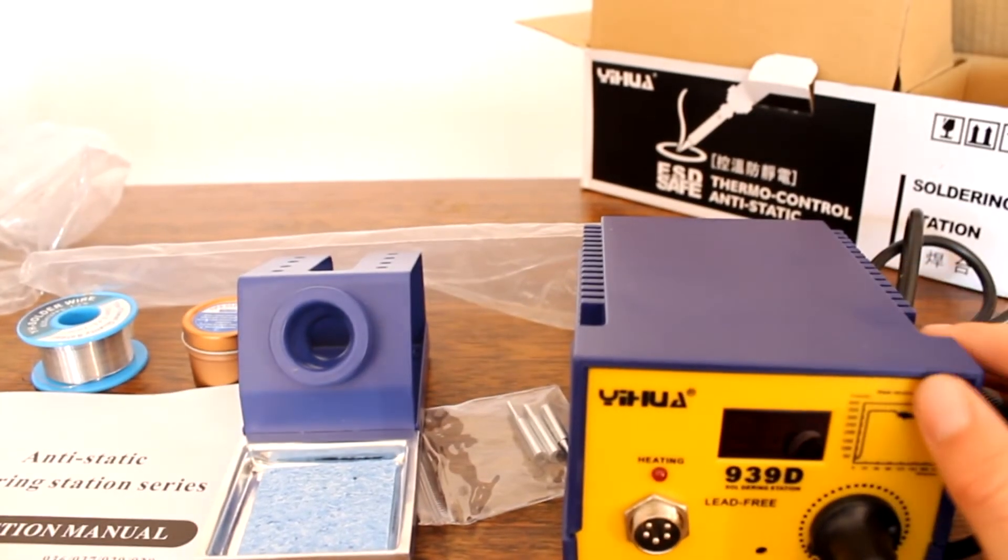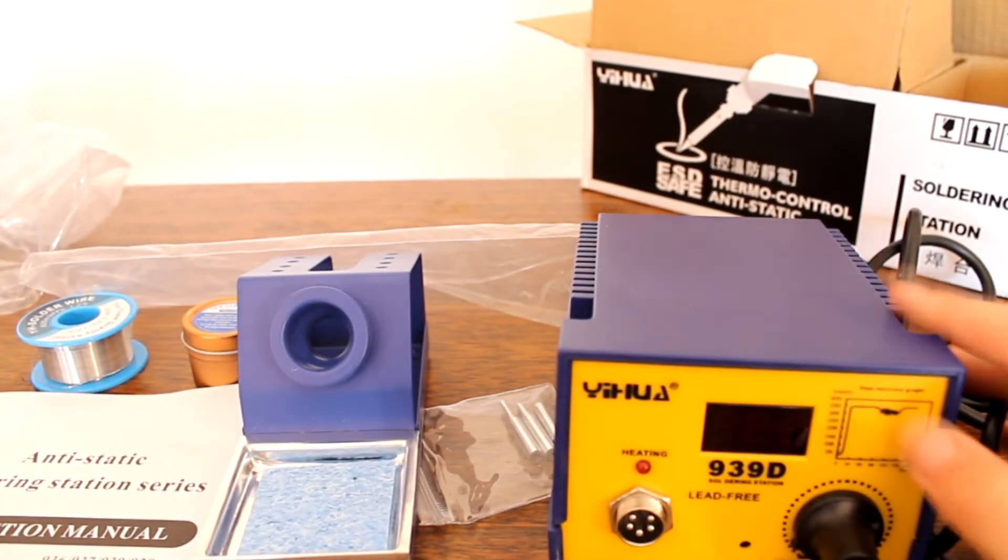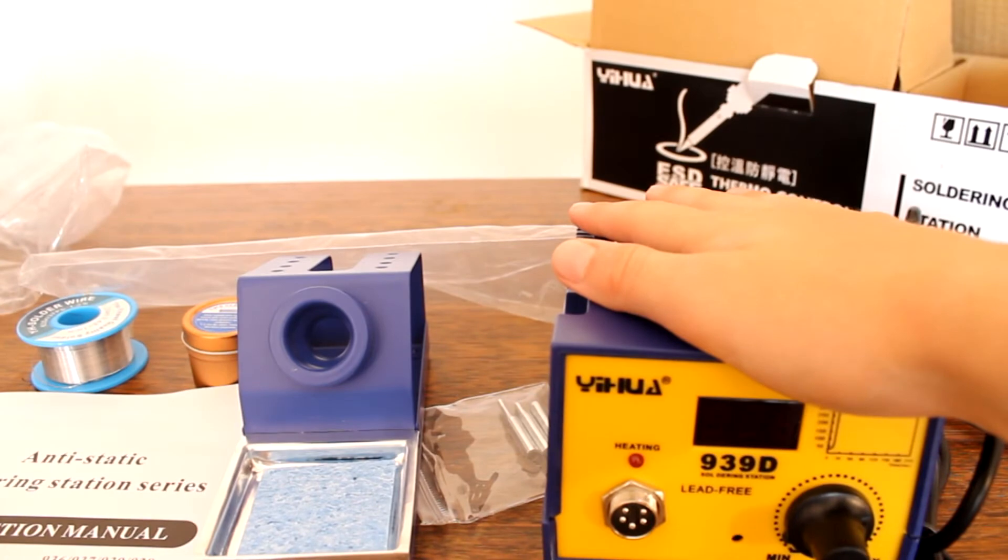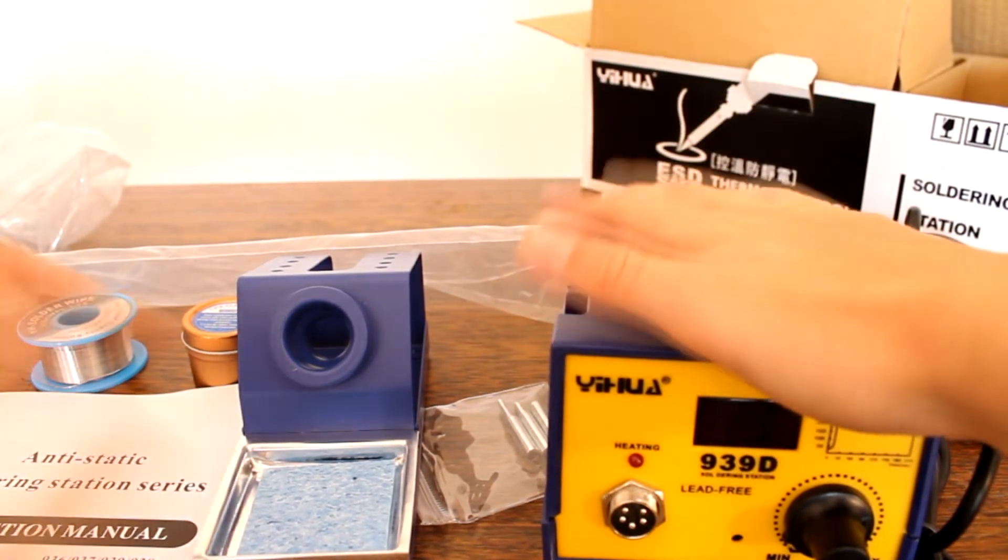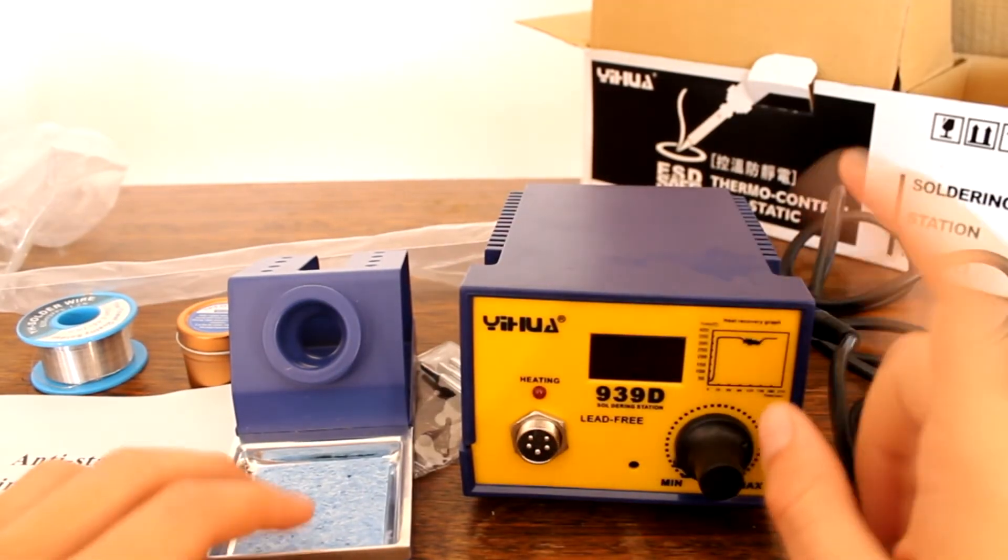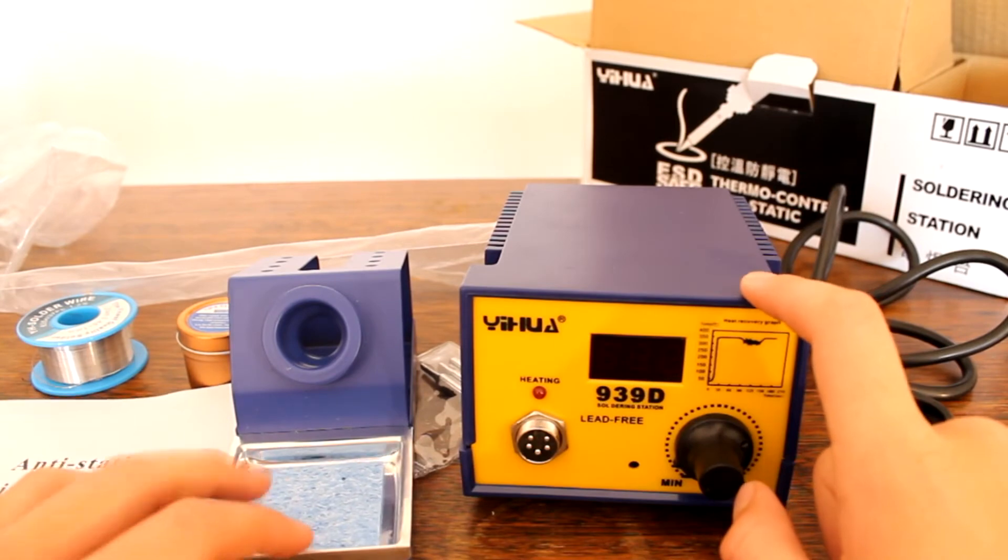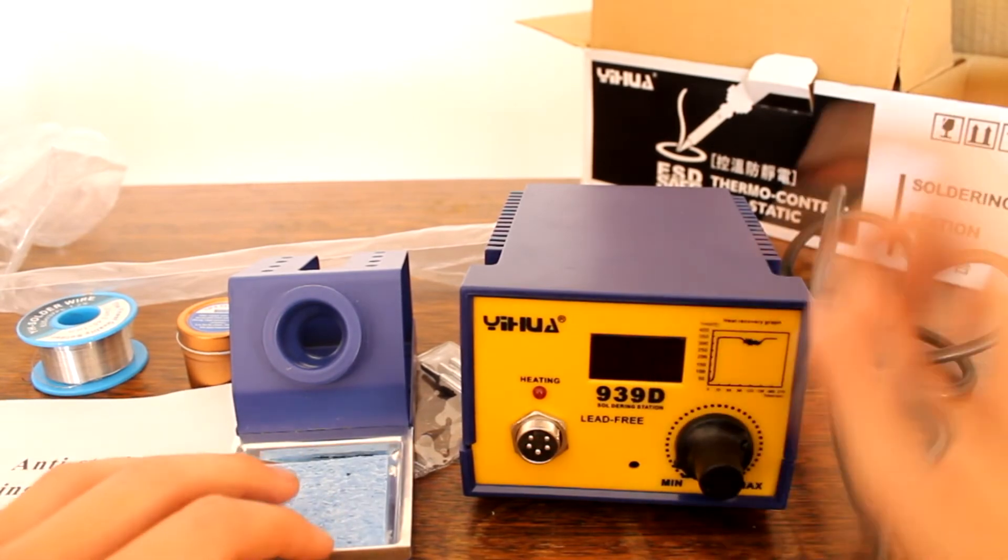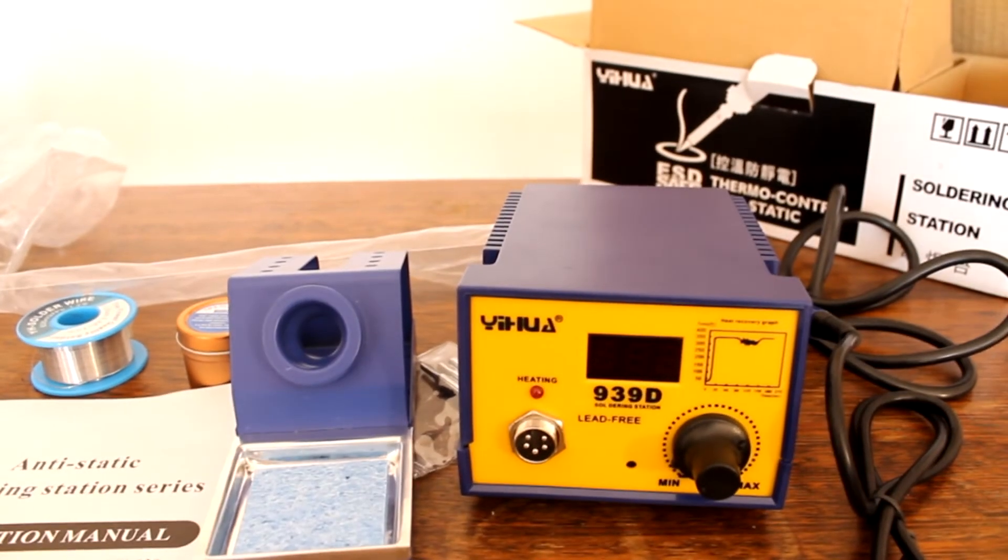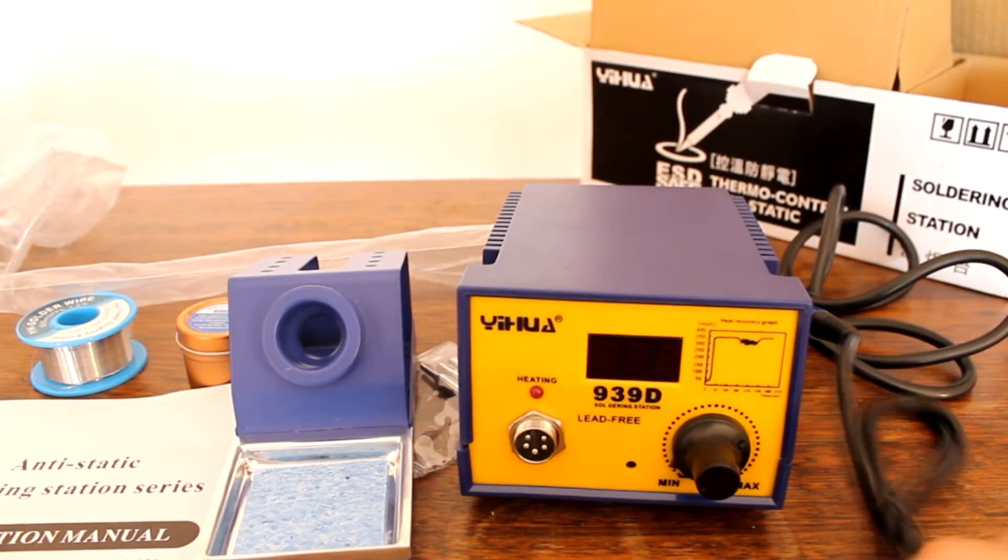So, yeah, that's just my unboxing and first thoughts of the Yeehua 939D. It's not the 937D, which everyone talks about. Which my friends got. It's a 939D, because it looks like the Hakko. So, that's why I decided to get it. And then, well, it also just looks awesome compared to just the black. I'm really excited.